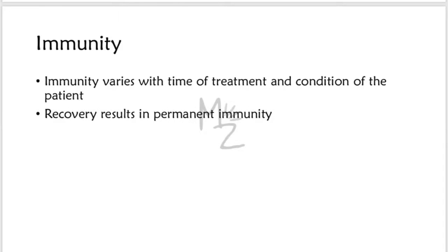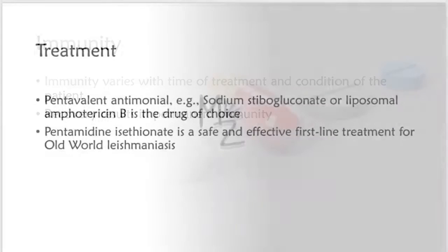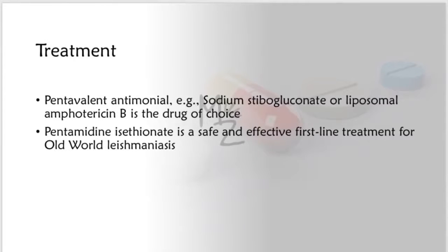Immunity varies with time of treatment and condition of the patient. Recovery results in permanent immunity. Treatment: pentavalent antimonials, for example sodium stibogluconate, or liposomal amphotericin B is the drug of choice. Pentamidine isethionate is a safe and effective first-line treatment for Old World leishmaniasis.